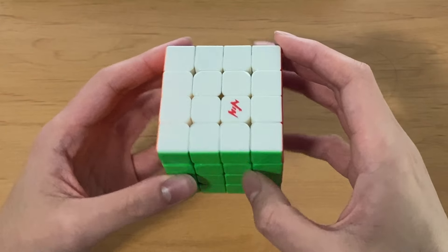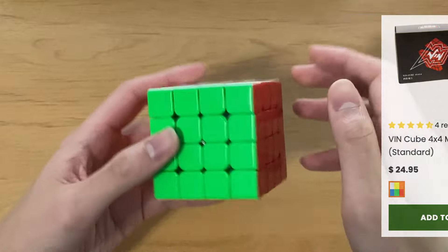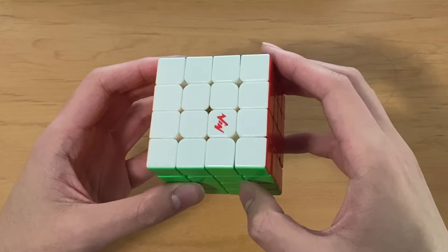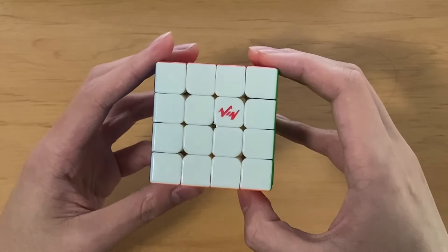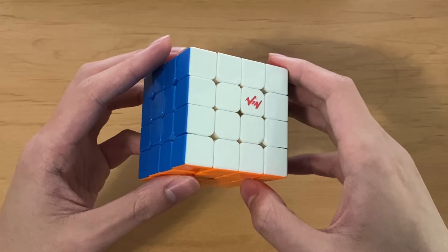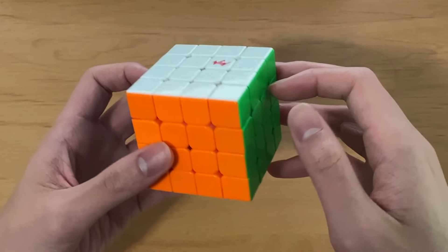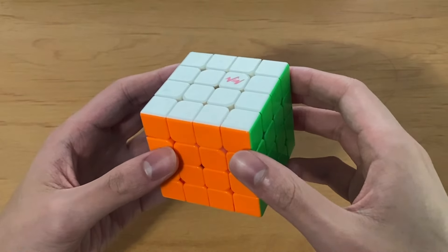For 4x4, I used the VIN 4x4 non-UV coated. I heard this cube was really good, so I decided to get one and try it out, and it actually is really good. I'm honestly very pleasantly surprised with how well this performs. It's pretty similar to an MGC 4x4, but the magnets are lighter and the turning is a little bit smoother.